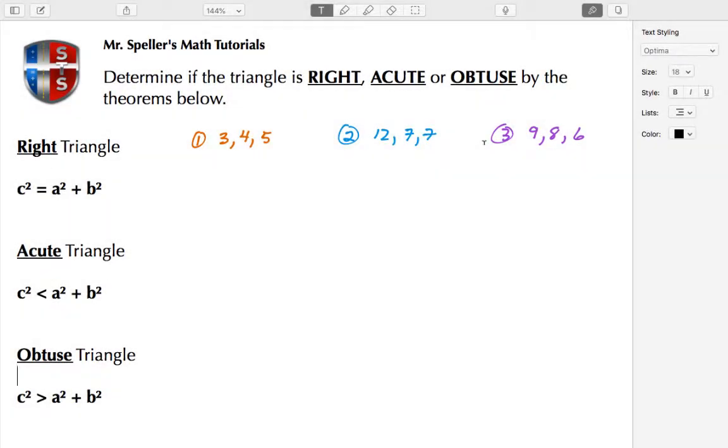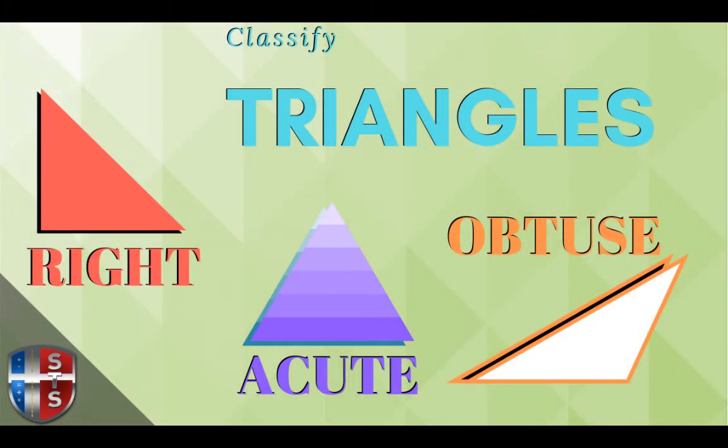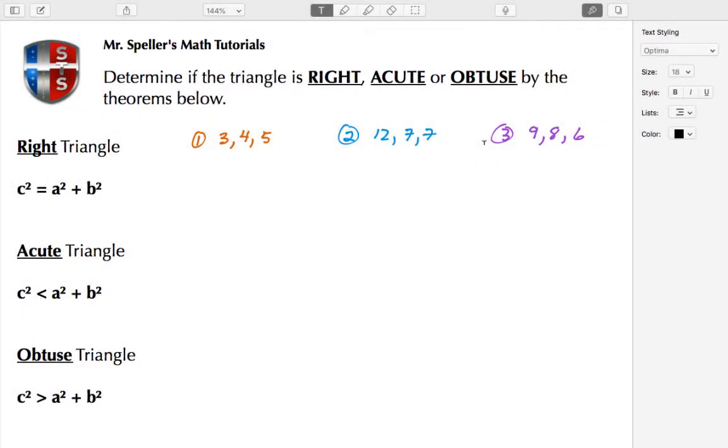Welcome back to Speller's Math Tutorials. In today's clip, we're going to determine if a triangle is right, acute, or obtuse by the theorems that we see here below.